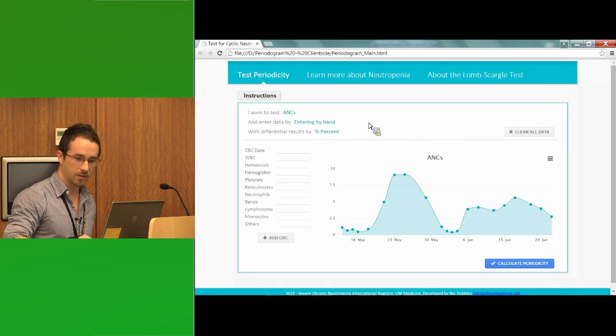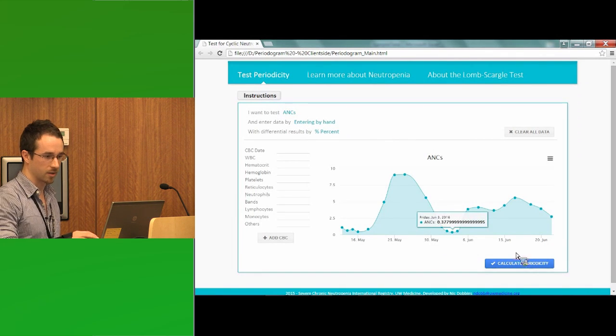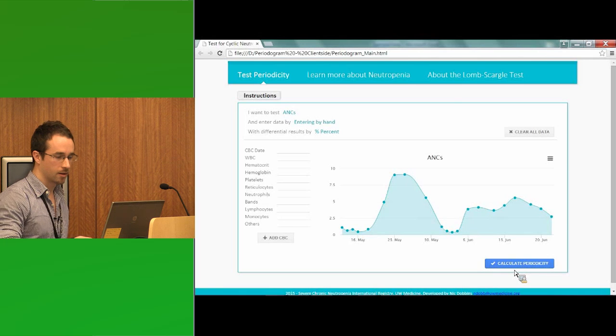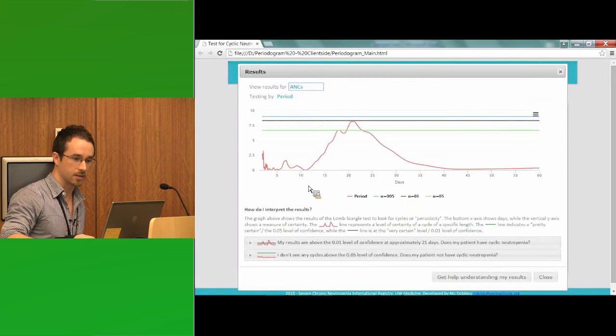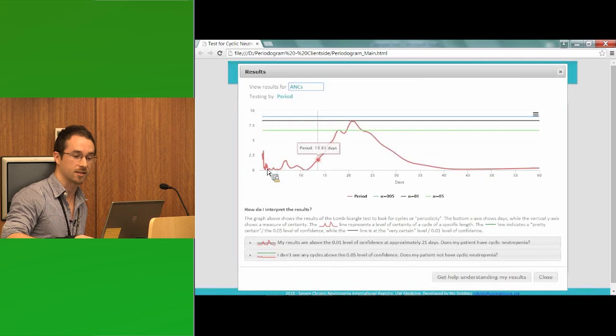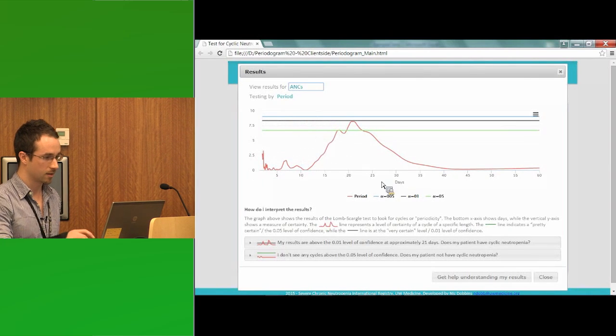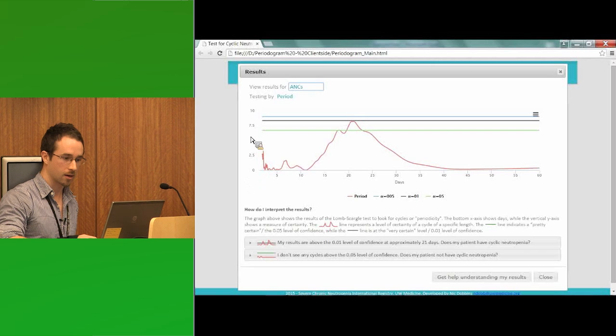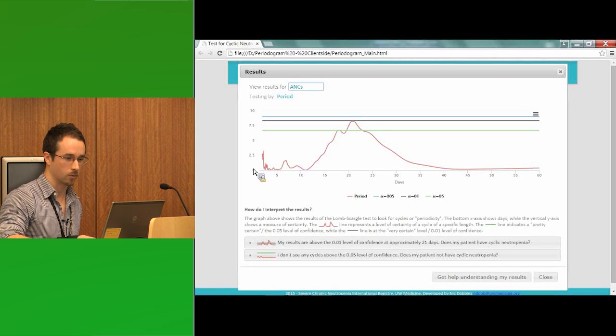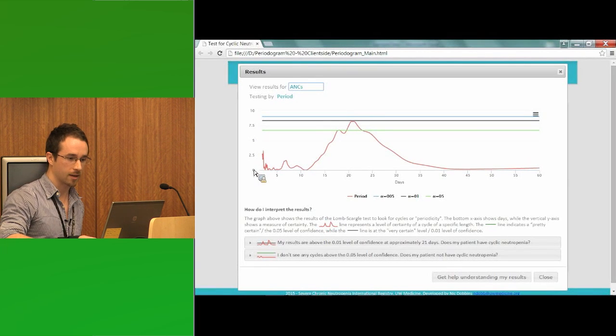And so here on our red line, I'm sorry, the x-axis is the number of days. And the y-axis is kind of the measure of certainty for what we're looking at. So if we look at our graph, and we can read the explanation down here first, maybe that's helpful.